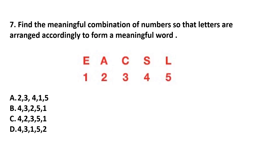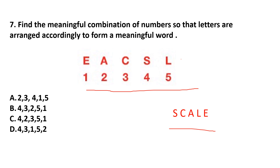Question number 7. Find the meaningful combination of numbers so that the letters are arranged to form a meaningful word. These letters are given and we have to find a meaningful word. We can make the word SCALE from these letters. Here, S is 4, C is 3, A is 2. The correct answer is Option B. You can check other numbers also, kids.